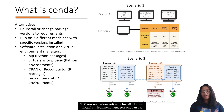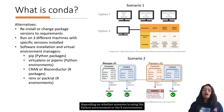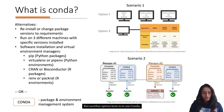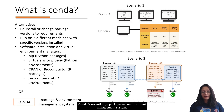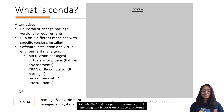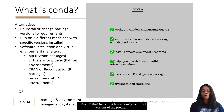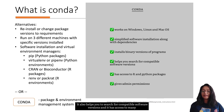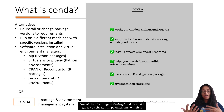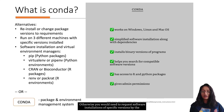There are various software installation and virtual environment managers one can use depending on whether someone is using the Python or R environment. Conda is essentially a package and environment management system. It is operating-system agnostic, meaning it works on Windows, Mac, and Linux. It enables simplified software installation along with dependencies, allows you to install pre-compiled binary versions of programs, helps you search for compatible software versions, and has access to many packages for both Python and R.